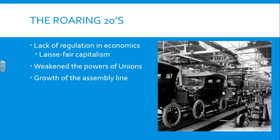Additionally, the assembly line is going to be growing and developing at this time period, pioneered by Henry Ford for Ford Motors. Instead of everyone in his factory building an individual car, each person is going to have a specialized task. As you can see in this picture, as the automobile goes down the line, one person puts the tire on, the next person screws it into place. Your job is simply that one individual thing, which means you can create a lot more products in a shorter amount of time.